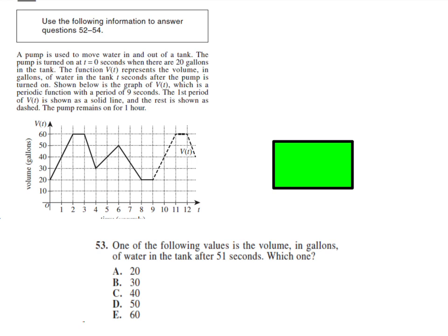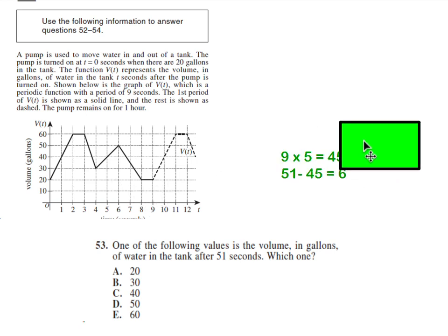They want to know the volume in the water after 51 seconds. So just for example, after four seconds, the volume is 30. After six seconds, the answer is 50. But remember, we know that it's going to keep doing this pattern over and over again every nine seconds, and nine times five is 45. So to get to 51 seconds, you're going to go through five complete cycles. Now, 51 minus that 45 leaves us with six. That means after the 45 seconds, it's going to start over, and then we have six more seconds, and so the volume will be 50 gallons.